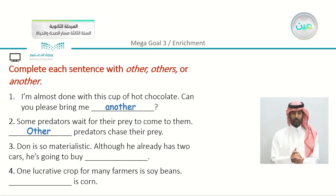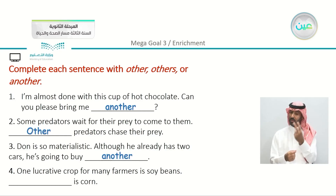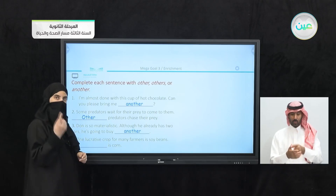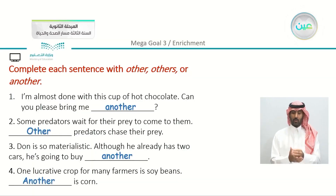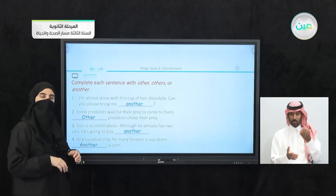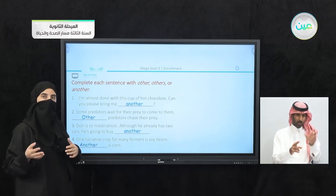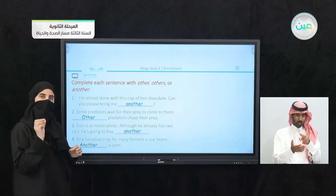'Don is so materialistic — although he already has two cars, he's going to buy another.' 'One lucrative crop for many farmers is soybeans. Another is corn.' Also, if the sentence ends with a full stop, start the next sentence with a capital letter. Pay attention to the smallest details.